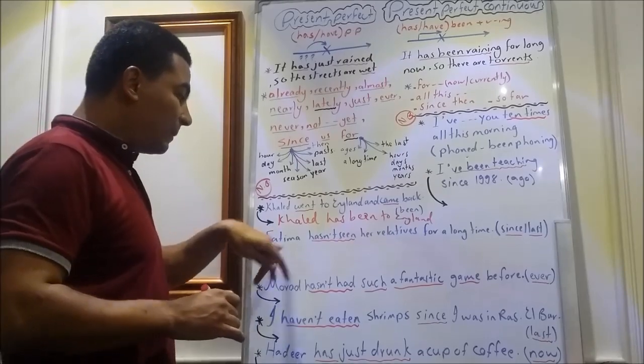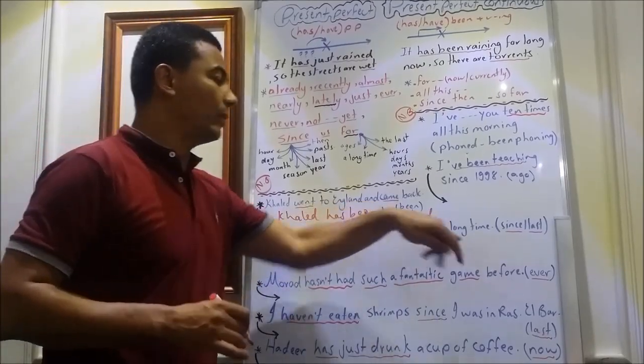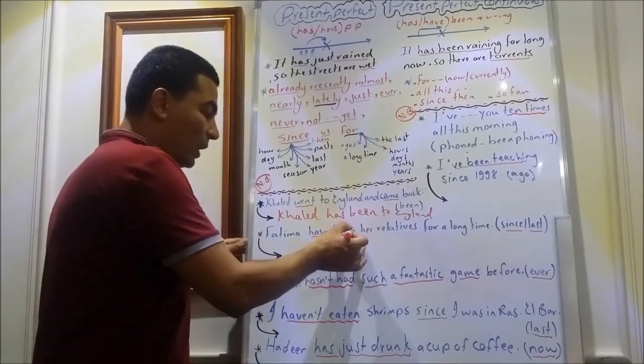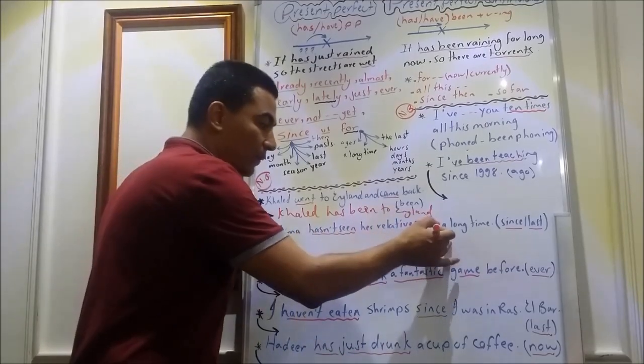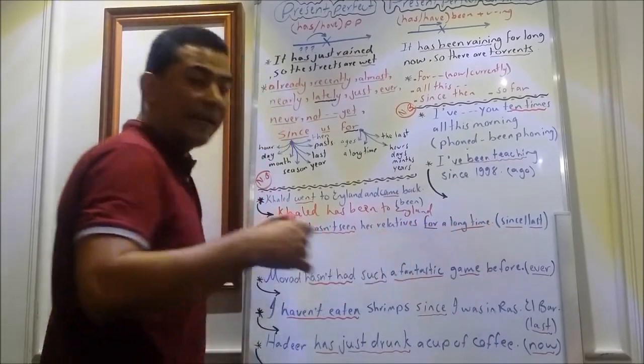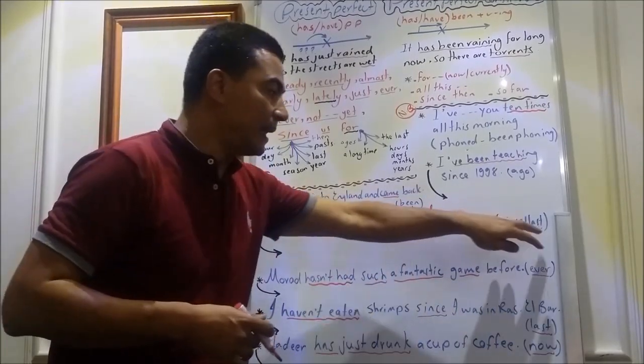Also, if I say Fatima hasn't seen her relatives for a long time, of course, here we have present perfect negation, for plus period of time. I can replace this sentence with since and last.